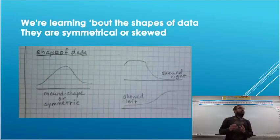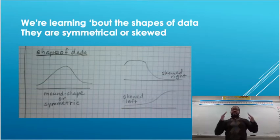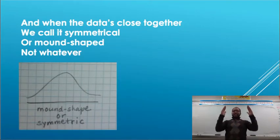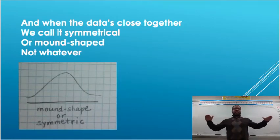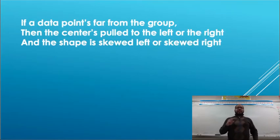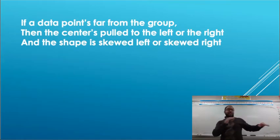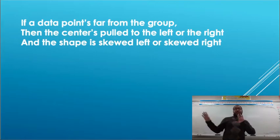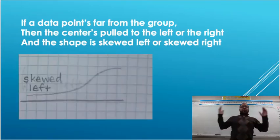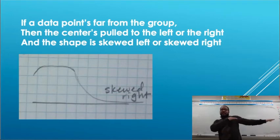We're learning about the shapes of data — they are symmetrical or skewed. When the data's close together, we call it symmetrical or mound shaped. If a data point's far from the group, then the center's pulled to the left or the right, and the shape is skewed left or skewed right.